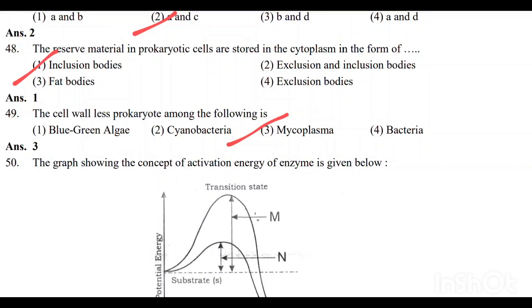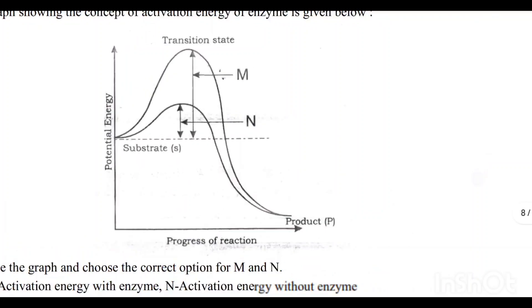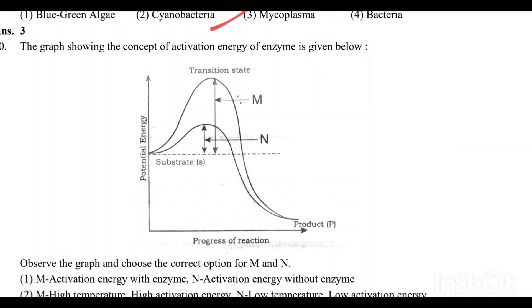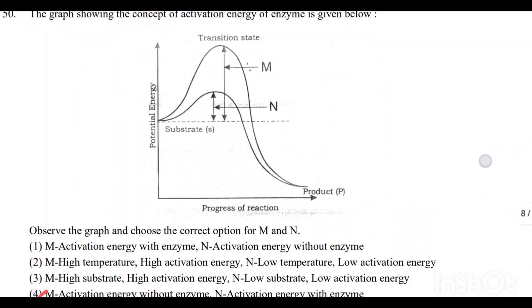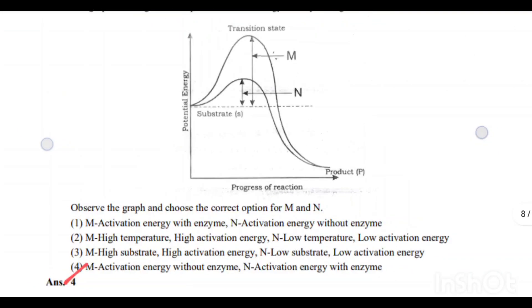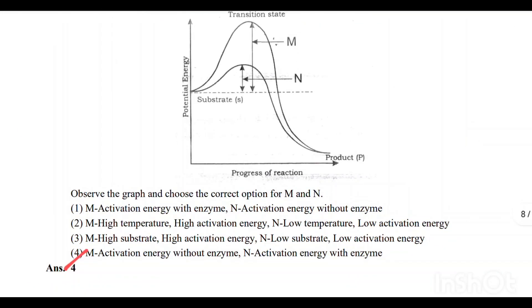Question number 49: One of the cell-wall-less prokaryotes among the following is mycoplasma. Option 3 is the correct answer. Question number 50: The graph shows the concept of activation energy. Option 4 is correct — M is activation energy without enzyme; N is activation energy with enzyme (catalyst).